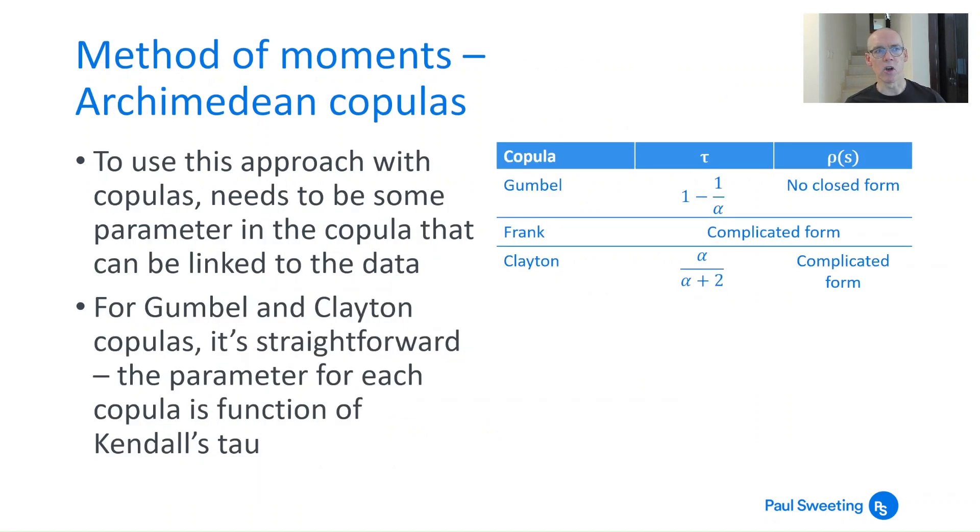The method of moments for Archimedean copulas is probably even a little bit easier, because most Archimedean copulas, at least the ones you're most likely to come into contact with, they've only got one parameter. And the parameter is linked to a correlation coefficient. For Gumbel and Clayton, and for using tau, Kendall's tau as your correlation coefficient, is really very straightforward. For the Gumbel copula, Kendall's tau is equal to 1 minus 1 over alpha, where alpha is the parameter in your copula.